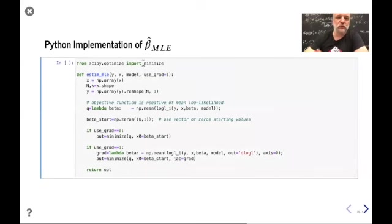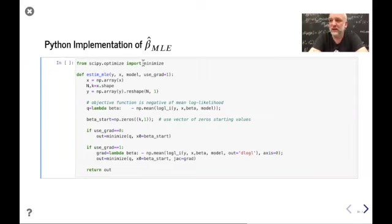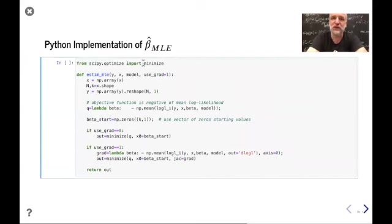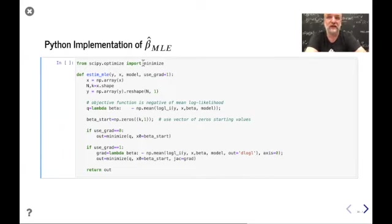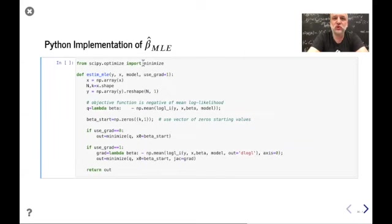First, we need a maximization routine. We import scipy's minimize. We use minimize with all defaults in place — this is sufficient because binary response models have well-behaved objective functions that are easy to maximize. The likelihood function for the logit model is, for example, globally concave, which means you can't really screw up the maximization as long as you have identification.